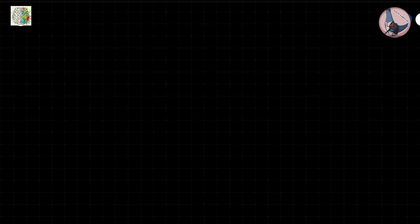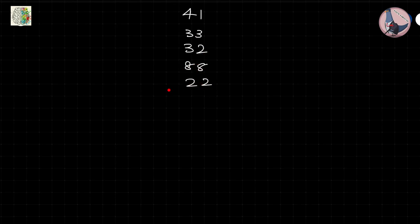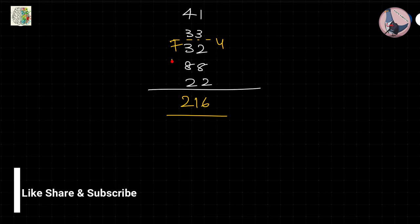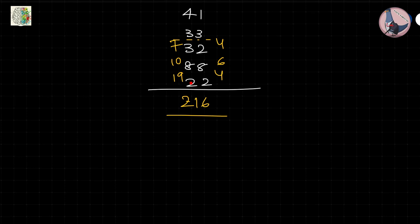For example: 41, 33, 32, 88, 22. I see unit digits: 1+3=4 not crossing 10; 4+2=6 not crossing; 6+8=14 crossing 10, so carry; 4+2=6. Tens: 4+3=7, +3=10, +8=18, +2=20, plus the carry from units gives 21. Answer: 216.